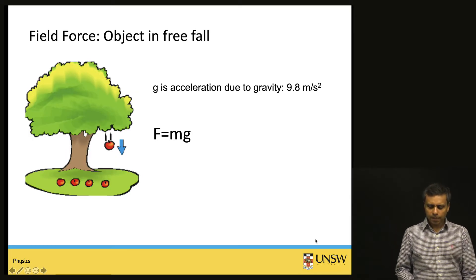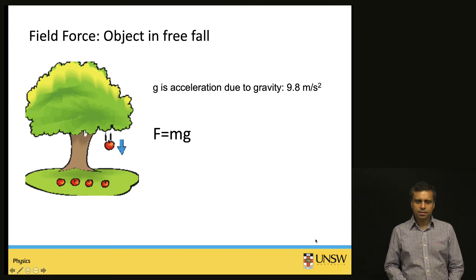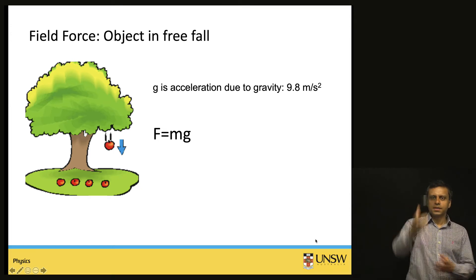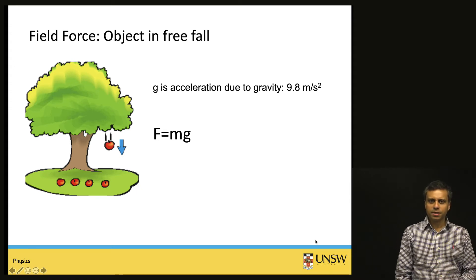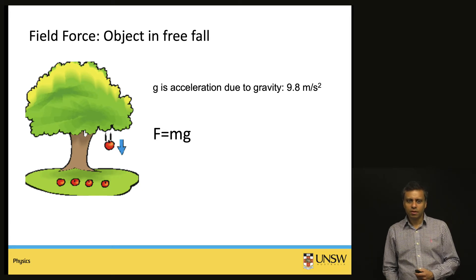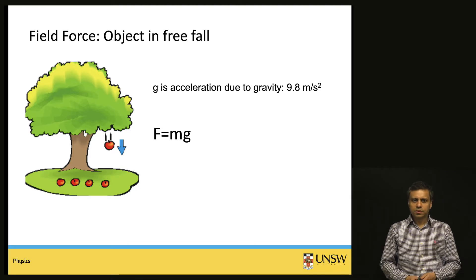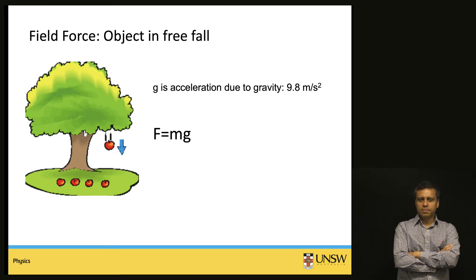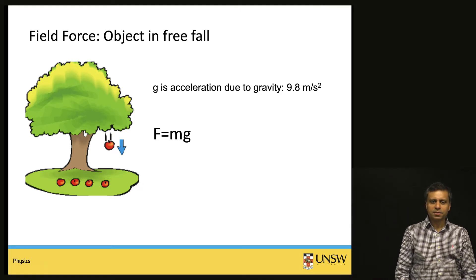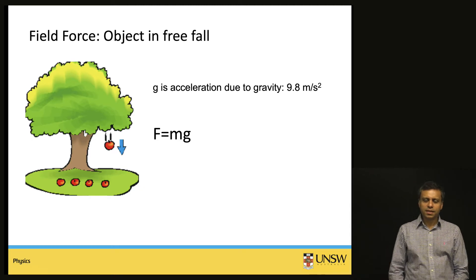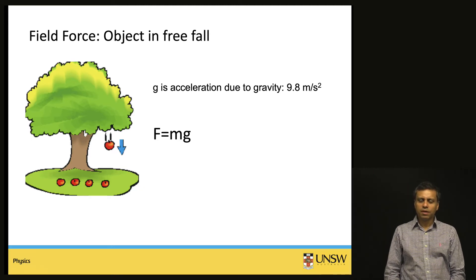What is the force that the earth applies on a body that is freely falling? This is the famous example of the apple falling from the tree that inspired Newton to come up with his famous laws of motion and gravity. This is given by F equals mg, which also comes from F equals ma — Newton's Second Law — where m is the mass of the object and g is the acceleration due to gravity, which is 9.8 meters per second squared close to the surface of the earth.